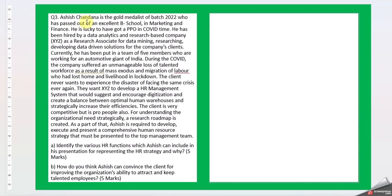Question 3: Ashish Chandana is the gold medalist of batch 2022 who passed out of an excellent B-school in Marketing and Finance. He was lucky to get a PPO during COVID time. He has been hired by a data analytics and research-based company XYZ as a Research Associate for data mining, researching, and developing data-driven solutions. He is currently in a team of five members working for an automotive giant of India. During COVID, the company suffered an unmanageable loss of talent force as a result of mass exodus and migration of labor who had lost home and livelihood in lockdown.